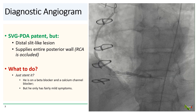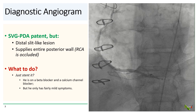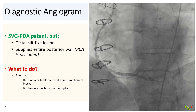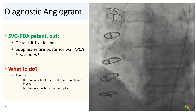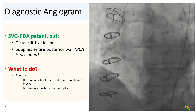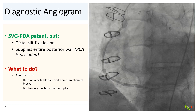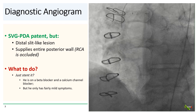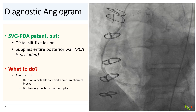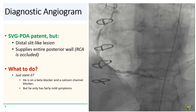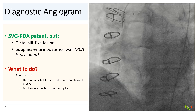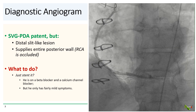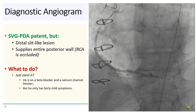So what should we do with this? Should we just stent it? He is on a beta blocker and a calcium channel blocker, but he has only fairly mild symptoms. This territory also does not exactly correspond to the lateral ischemia that the cardiologist saw on his nuclear stress test. So should we just leave it alone?